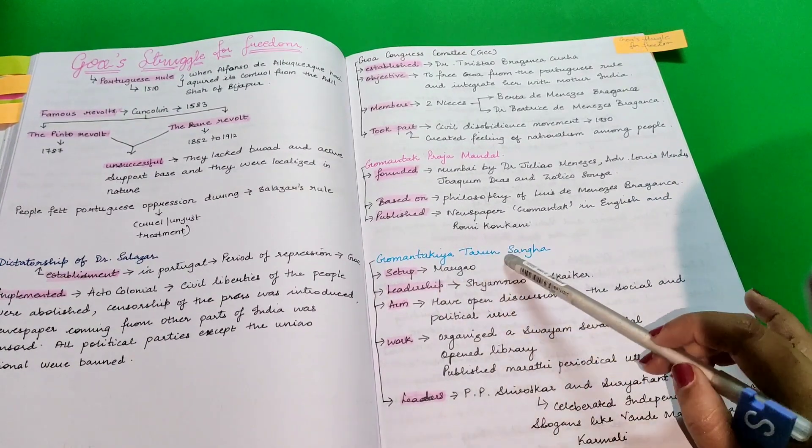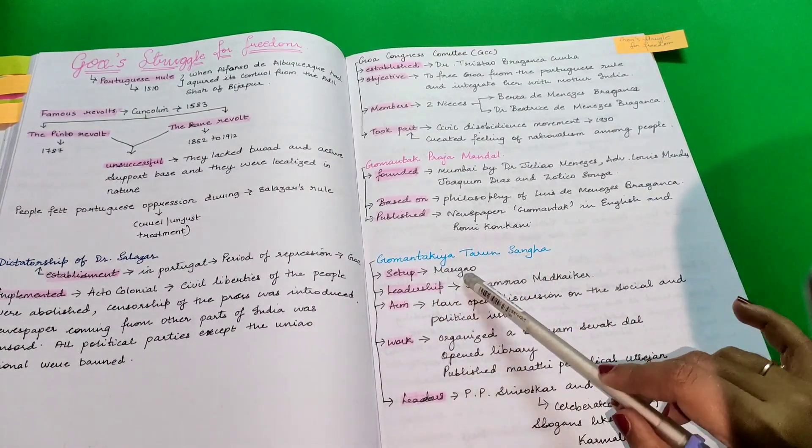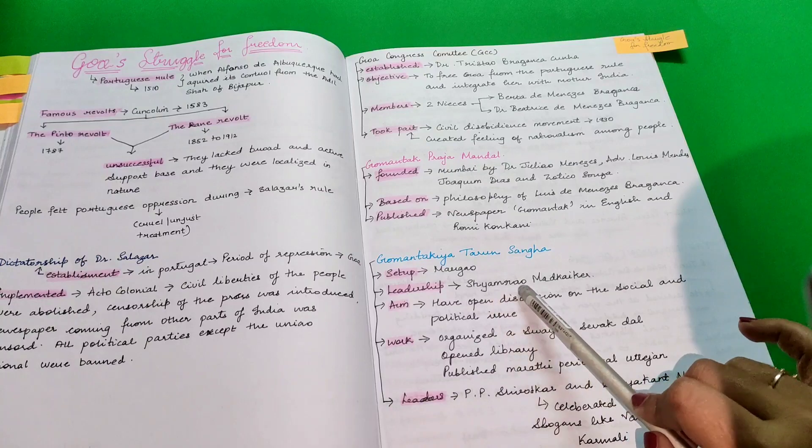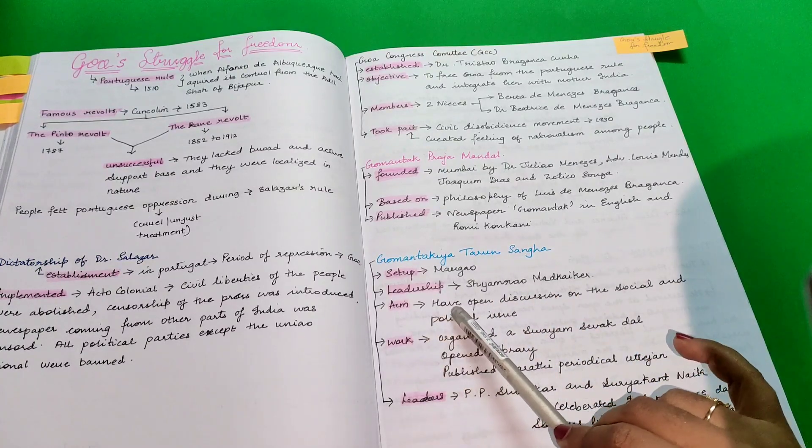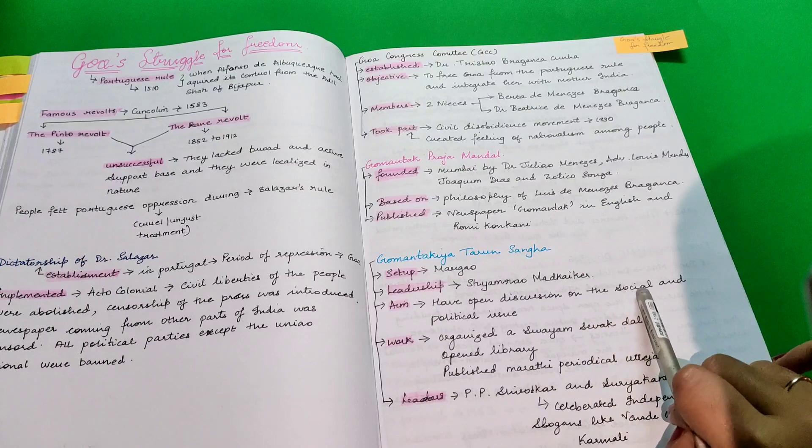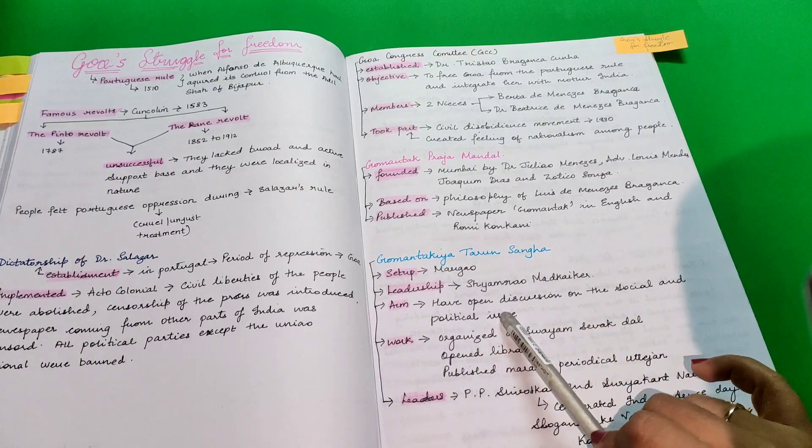Goa Mantakia Tarun Sanga was set up in Margao under the leadership of Shamrao Madkaikar. The aim of that was to have an open discussion on the social and political issue.